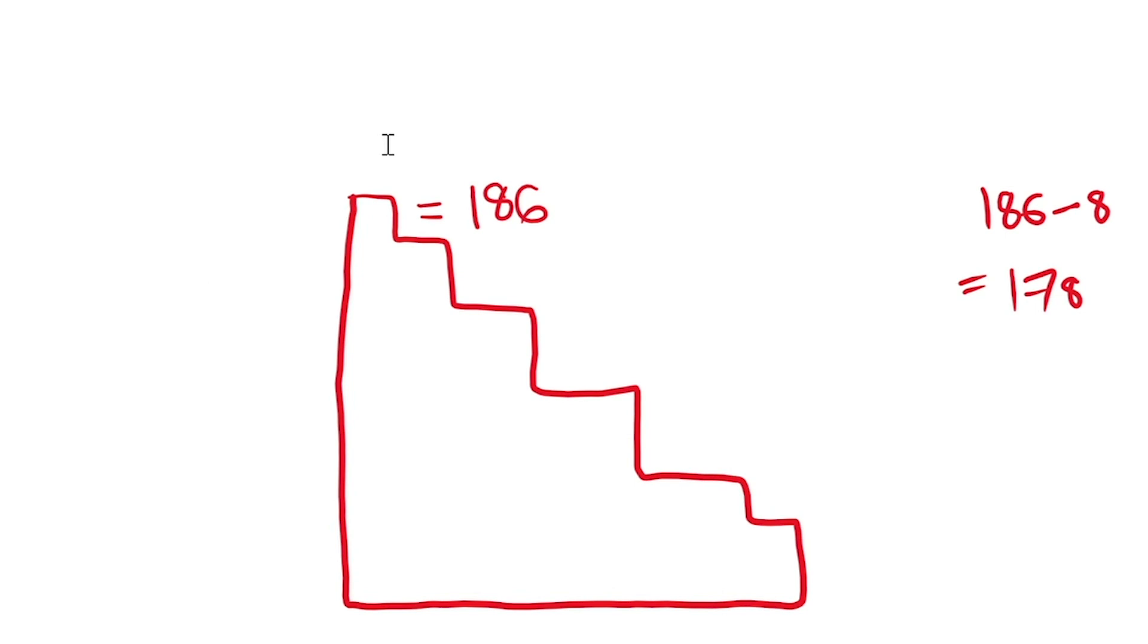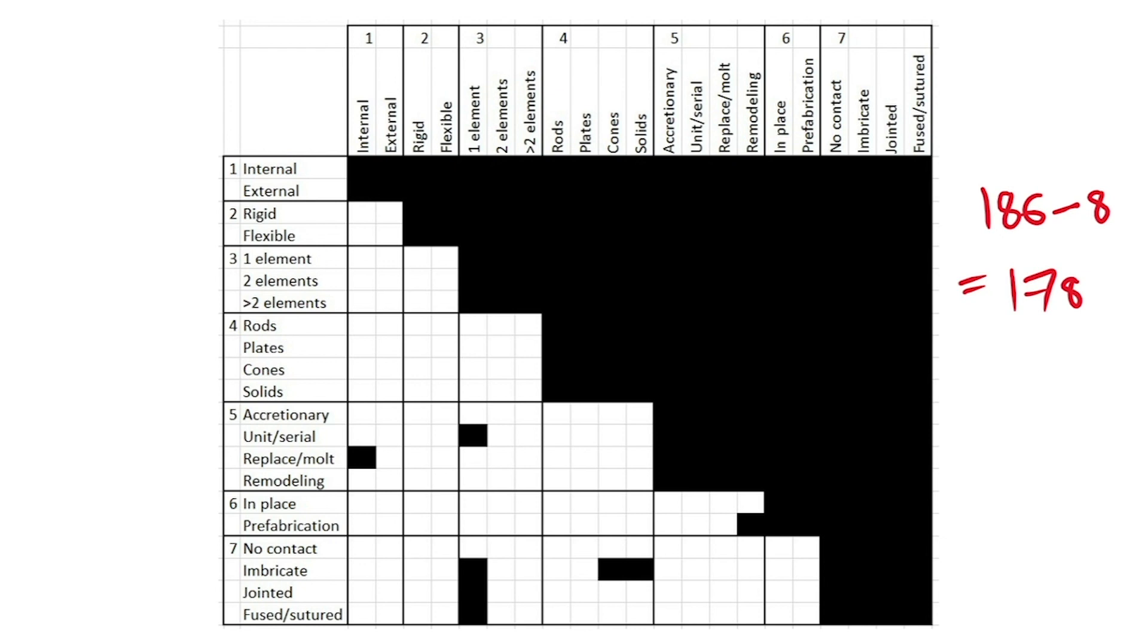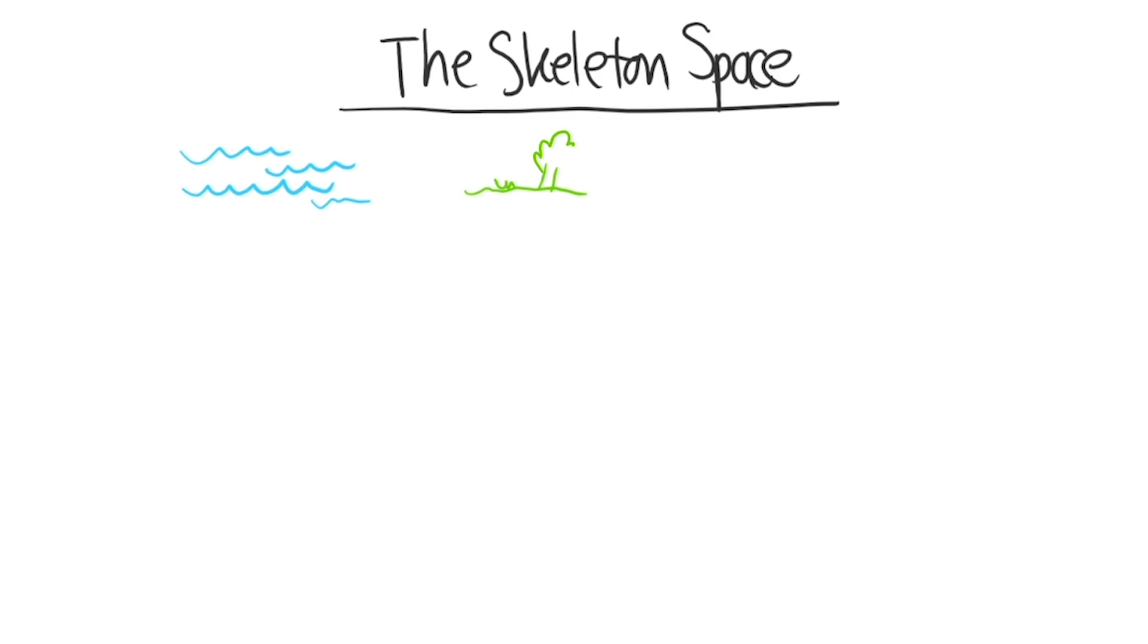Now, if these are theoretically the finite amount of skeleton options available for animals to evolve over time, how many types have actually been seen in nature? The answer is gratifying: very nearly all of them. But this diversity changes between different habitats because these will have different sets of constraints.